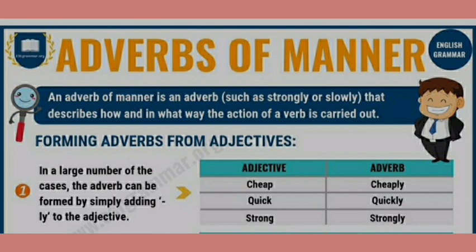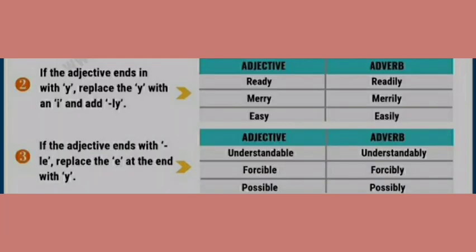If the adjective ends in -y, replace the y with i and add -ly. For example: ready → readily, merry → merrily, easy → easily. If the adjective ends in -le, replace the le at the end with -y. For example: understandable → understandably, forcible → forcibly, possible → possibly.